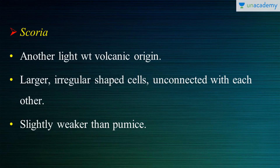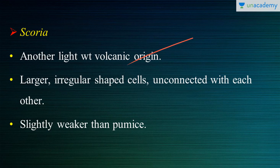The next one is scoria. These are another volcanic origin lightweight aggregate. If you look at the internal structures, we can see that these contain larger and irregular shaped cells which are unconnected with each other. When we compare with tuffs, tuffs are connected with each other, but scoria cells are unconnected — which is one of the reasons why these are slightly weaker than pumice. In tuffs and pumice, the internal bonds are really connected with each other; here they are not much connected, and hence it's not as strong as pumice.